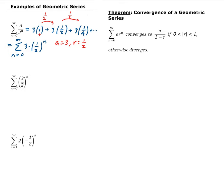Now we can apply the theorem. This geometric series will converge to a over 1 minus r, provided the absolute value of the ratio is between 0 and 1. Since the absolute value of r is 1 half, which is strictly less than 1, this series converges. It converges to 3 over 1 minus 1 half, which is the same as 3 divided by 1 half, giving us 6.